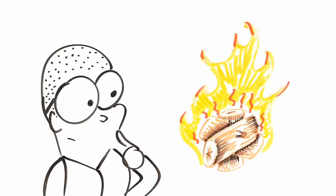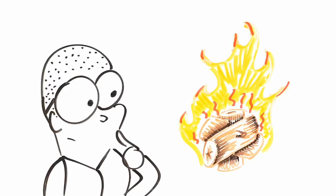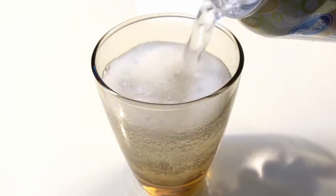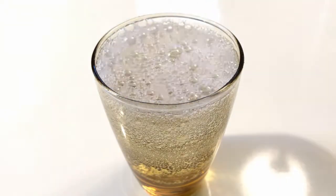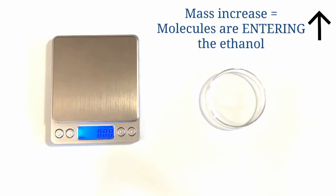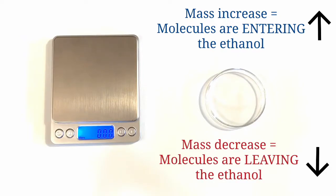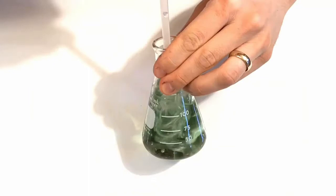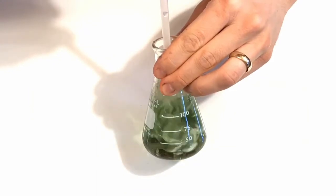Besides these initial observations, what else can we do to investigate burning ethanol further? Earlier in this series we investigated what happens when soda fizzes. Maybe we can use the same investigation tools. We can use a scale to figure out how burning ethanol changes its mass. If the mass increases as it burns, that means molecules are entering the ethanol. If the mass decreases, that means molecules are leaving the ethanol.